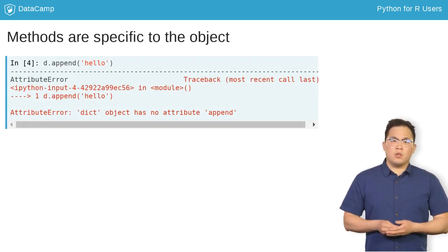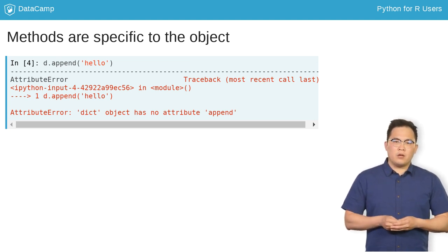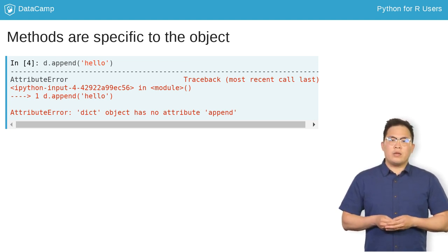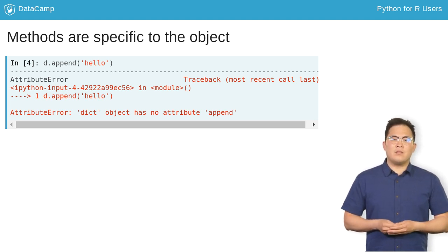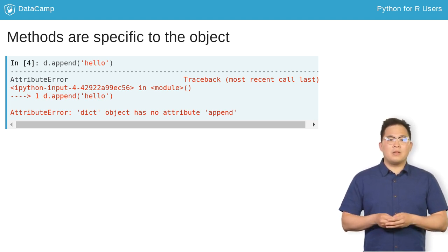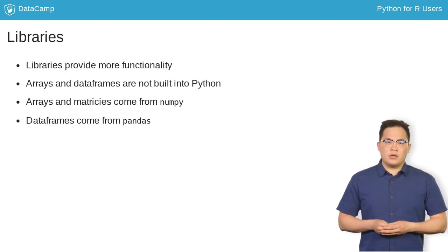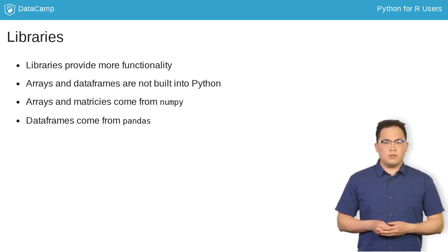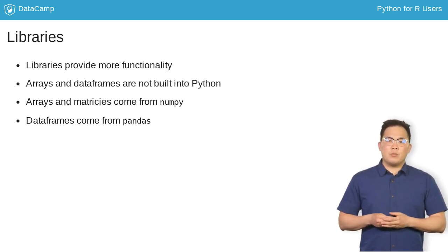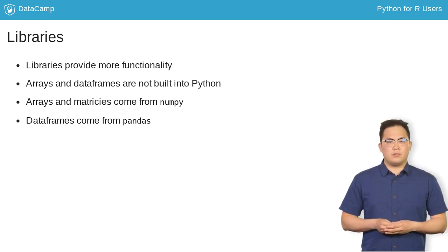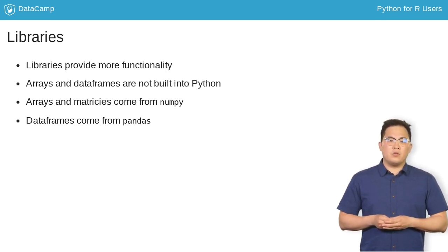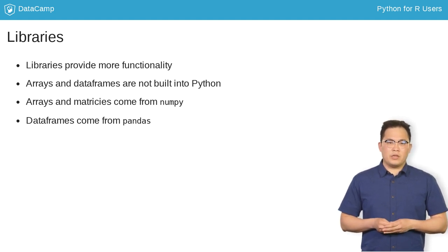Methods are special functions that belong to specific objects. If you try calling append on a dictionary object, you will get an error, because the method append is not defined for a dictionary, but it is defined for a list. The array and data frame objects, which are widely used in data science, are not available in Python by default. You need to import separate libraries for these objects. NumPy gives you the array and matrix object, and pandas gives you the data frame object.